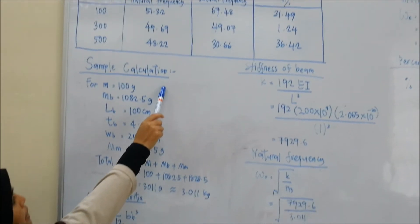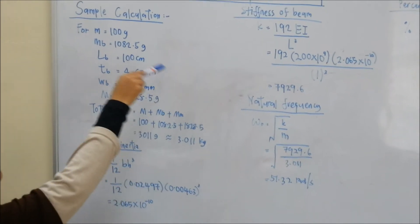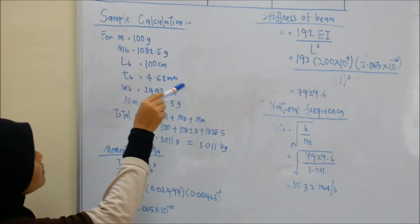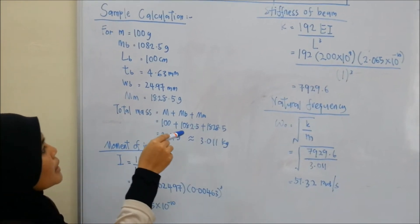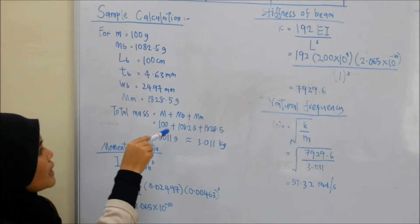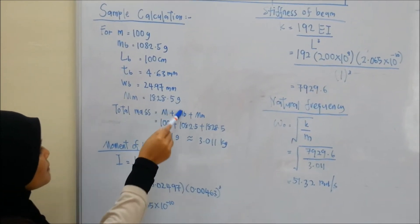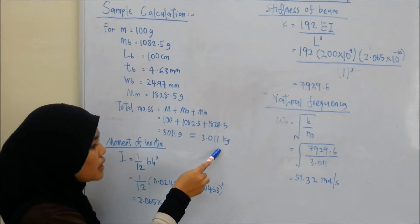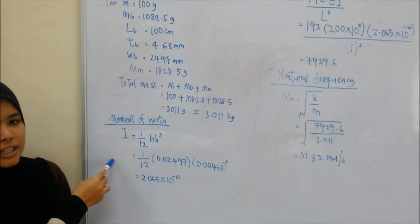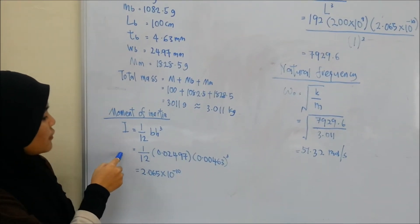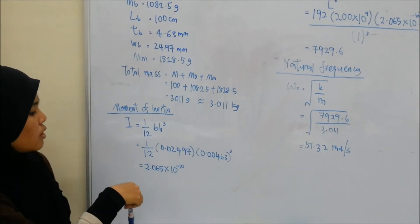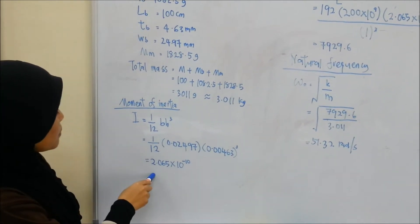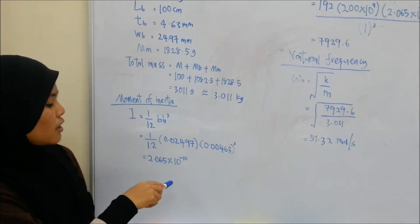This is a sample calculation for mass equal to 100g. Mass of beam equals 1082.5g, length of beam equals 100cm, thickness of beam equals 4.63mm, width of beam equals 24.97mm, mass of motor equals 1828.5g, and total mass of beam and motor equals 3.011kg. Next, we calculate the moment of inertia. The formula is I = (1/12)bh³. Substituting the values of b and h, we get 2.065 × 10⁻¹⁰.